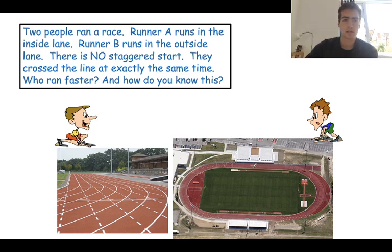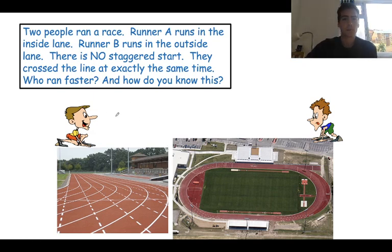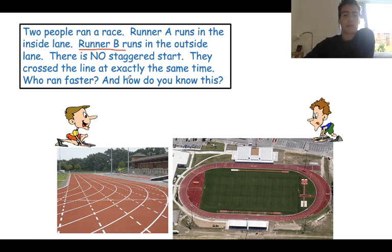To help you think about that, consider this: two people ran a race. Runner A runs in the inside lane. Runner B runs in the outside lane. There is no staggered start and they cross the line at exactly the same time. Who ran faster? The answer would be Runner B, because they have a longer distance to travel. They have to travel much further in the outside lane, but they finish at the same time.